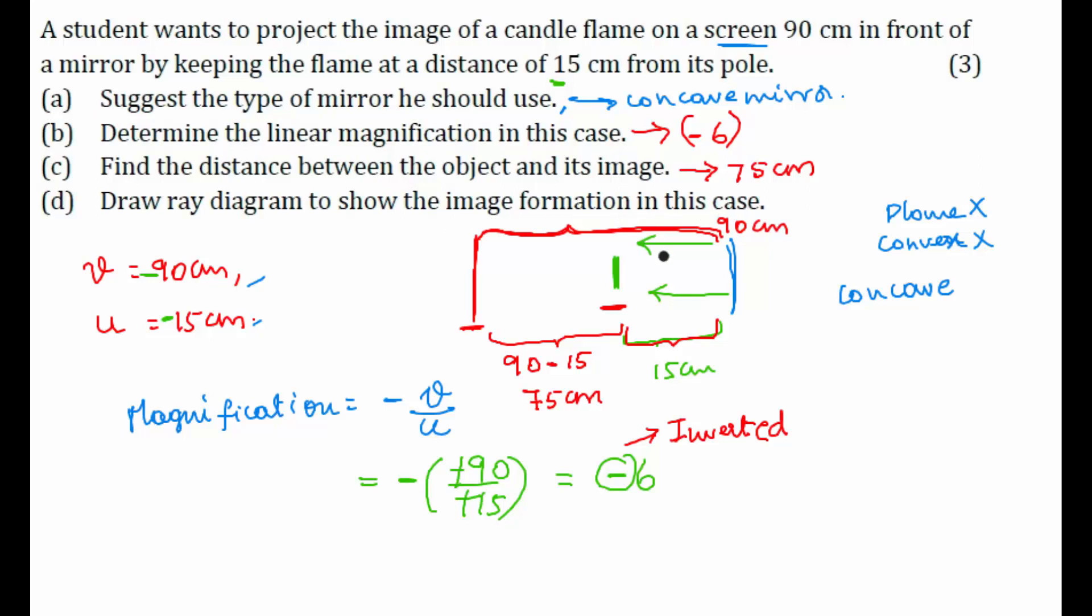One important point is here we are getting an inverted image and also magnified image. Right? Now, when do we get an inverted image and a magnified image? When the object is placed between center of curvature and focus. So, very important point. Here the object is placed between center of curvature and focus. So, we will consider that point when we draw this ray diagram.